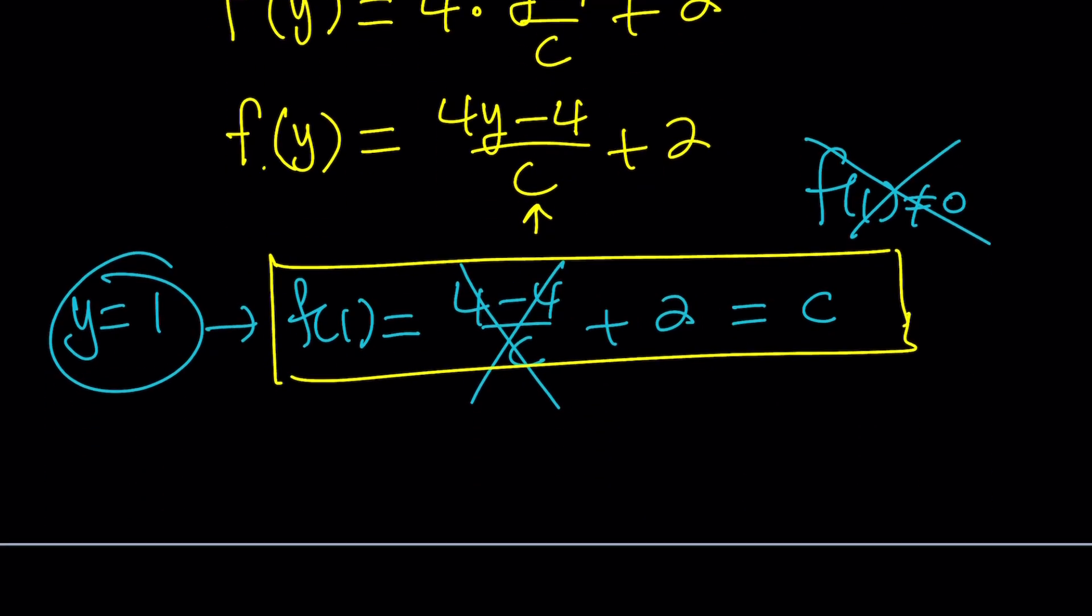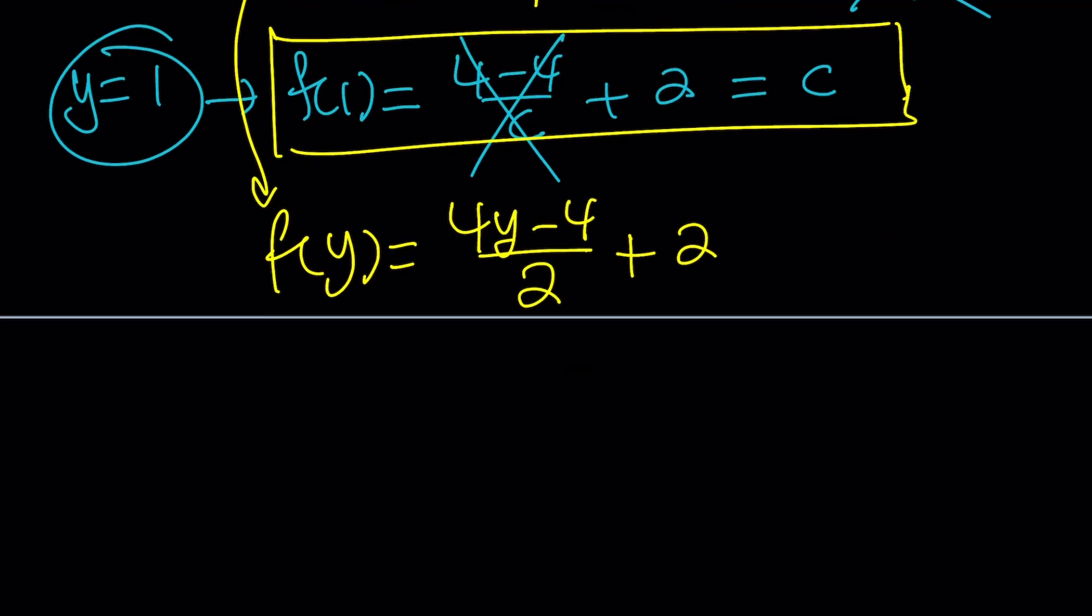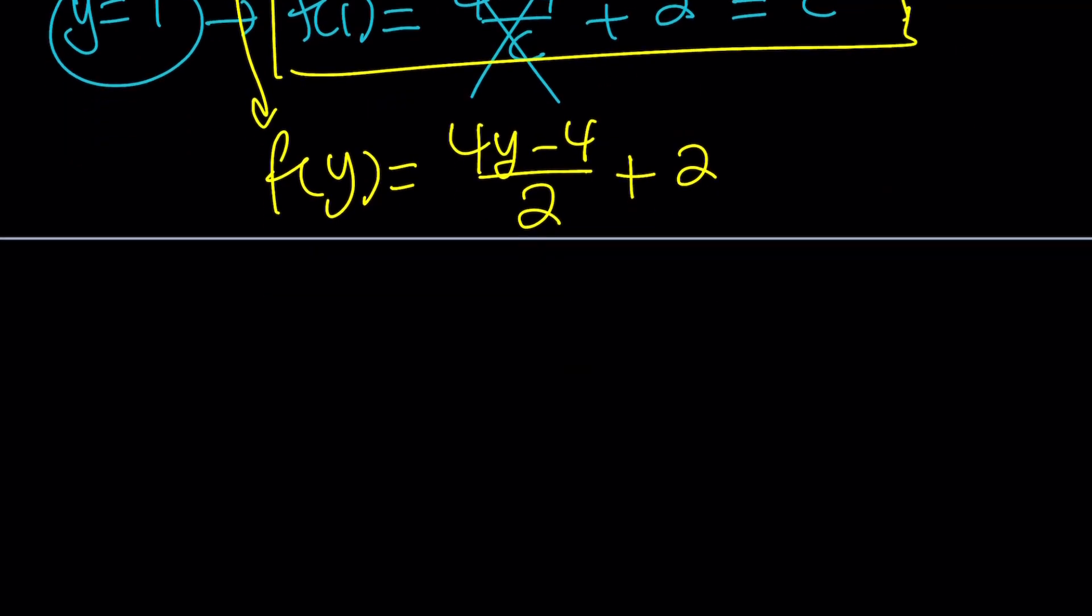Now, this gives us f(y) equals 4y minus 4 divided by 2 plus 2. And then, from here, we can basically divide the top and the bottom by 2. So, we get f(y) equals 2y minus 2 plus 2, and the minus 2 and the plus 2 cancel out, and we end up with f(y) equals 2y.